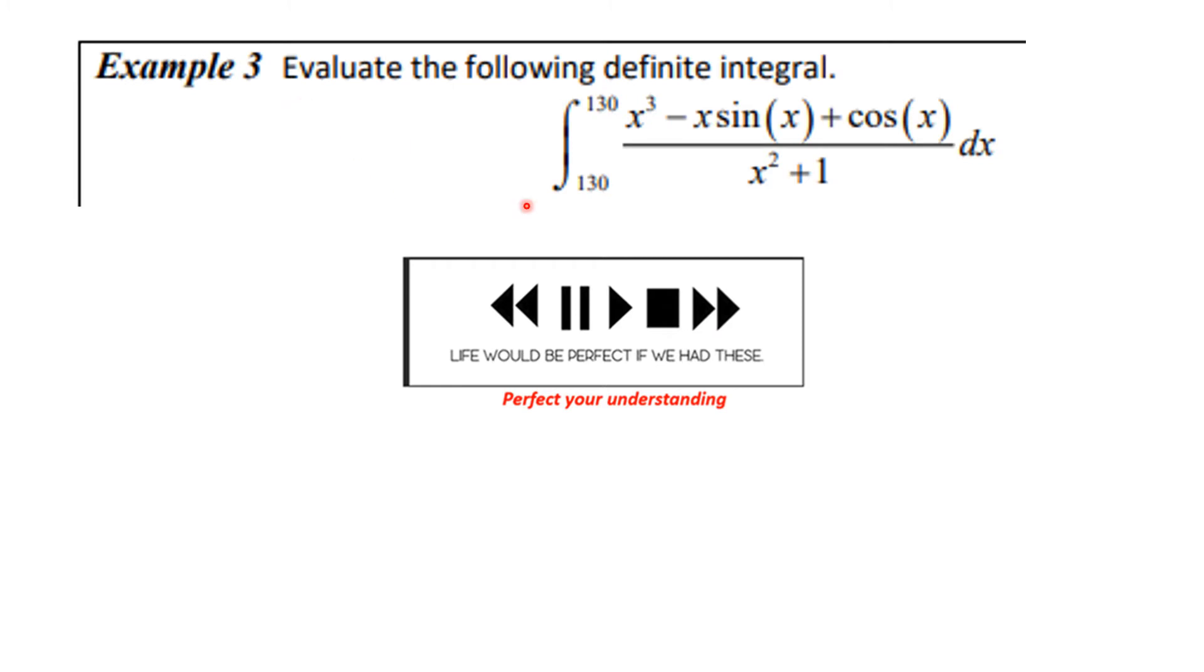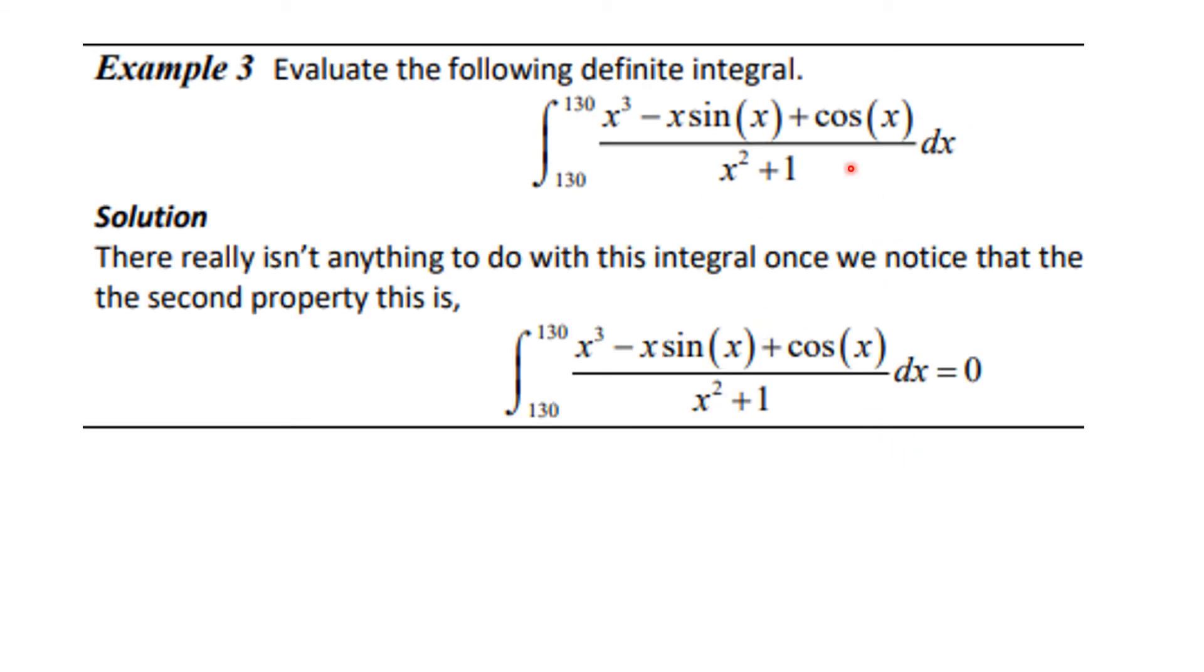Here's number three. I'm asking you to evaluate the integral from 130 to 130 of this complicated function with trigonometric things and polynomials and quotients thereof. You know what to do. Let's see how you did. Well, this has to be 0 because there's no area under a single point.